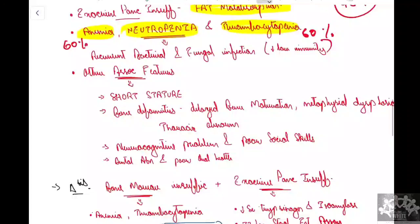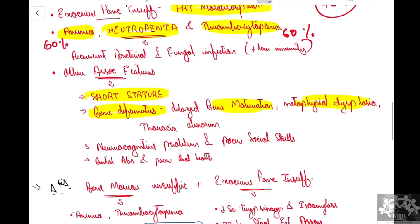Associated features include short stature — either due to the chronic nature of the disease or growth hormone abnormalities in some patients. Bone deformities include delayed bone maturation contributing to short stature, metaphyseal dysplasia as seen in our radiological findings, and thoracic abnormalities. Neurocognitive problems leading to poor social skills can also be present.